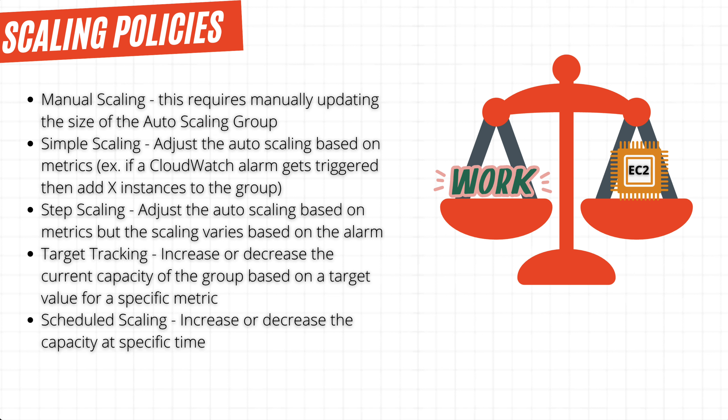Next we have step scaling, which is similar to simple scaling, but lets us define the rules in more detail based on the alarm that is breached. For example, if our CPU utilization hits above 70%, then we add one instance, and if it hits above 80%, then we add two more instances — and the same in reverse when we need to scale down. Step scaling allows us to react in a more extreme way, depending on the alarm that is breached.